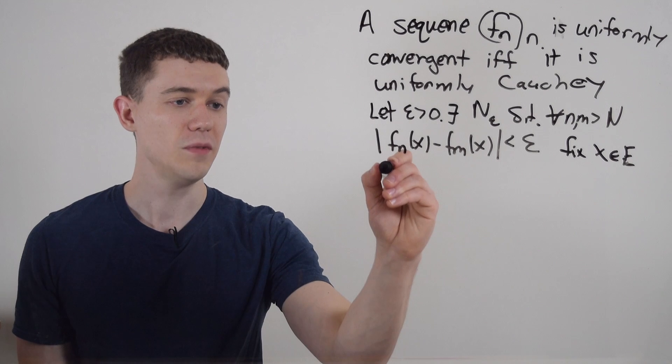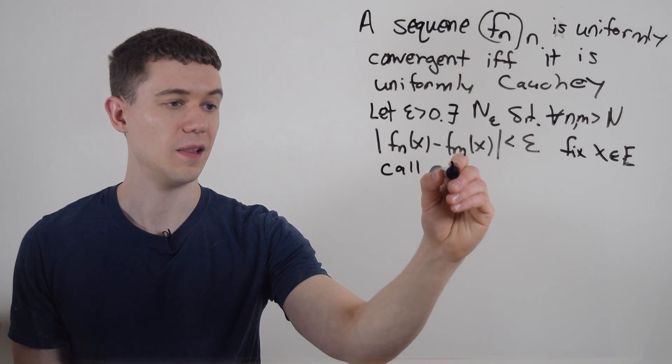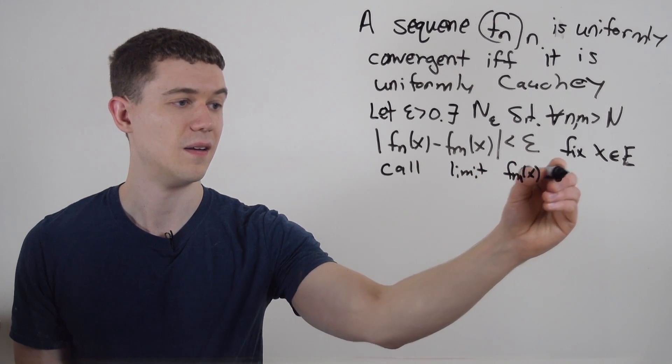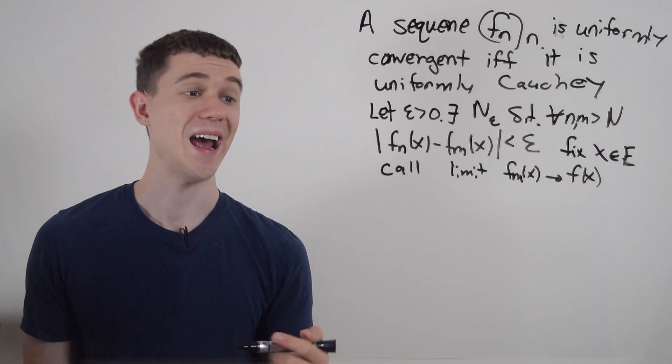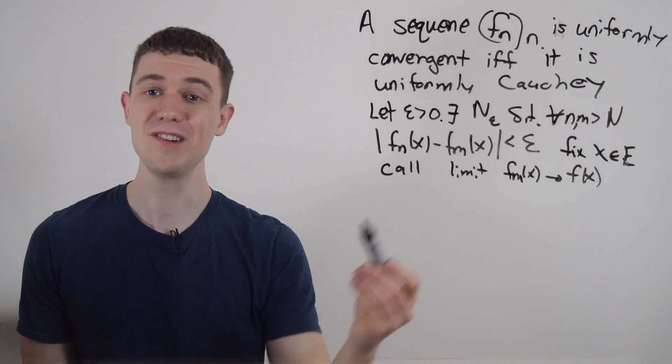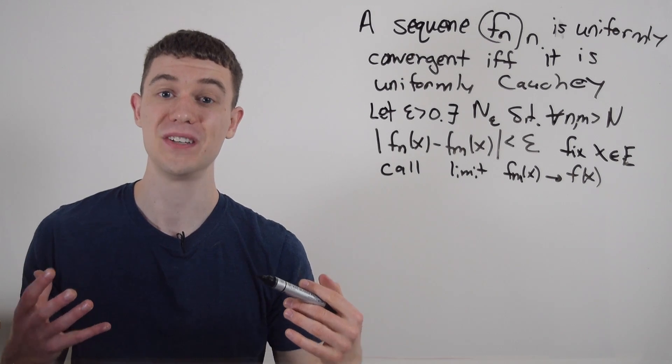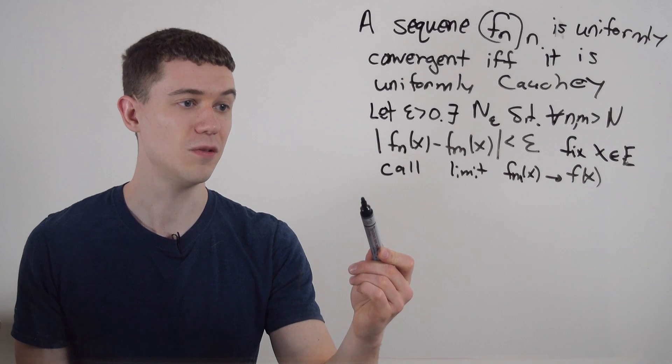So I'm just going to call the limit of f sub n, f of x, fixing this x. That's going to be my limit. And since it's a Cauchy sequence of real numbers now, a Cauchy sequence of real numbers converges. So I know that this is a convergent sequence.